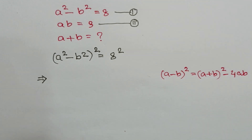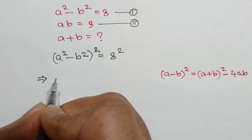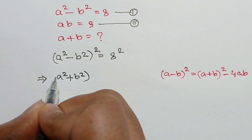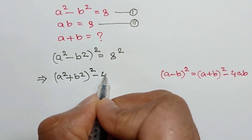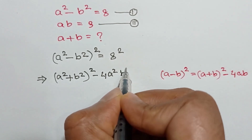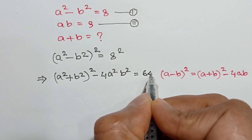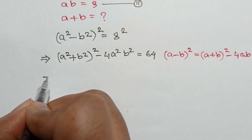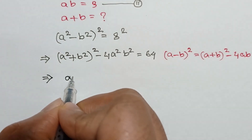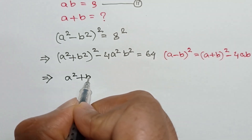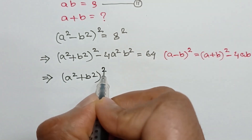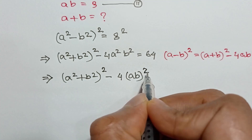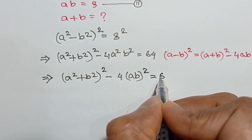Applying this formula we will get: a squared plus b squared, whole square, minus 4 times a squared b squared is equal to 8 squared, which is equal to 64. So a squared plus b squared, whole square, minus 4 times ab squared is equal to 64.